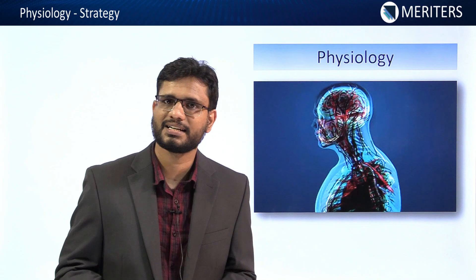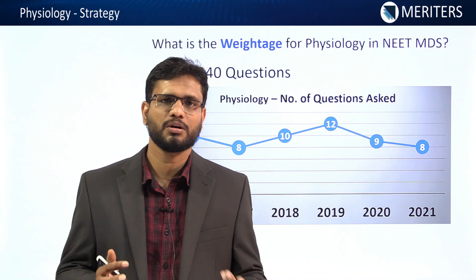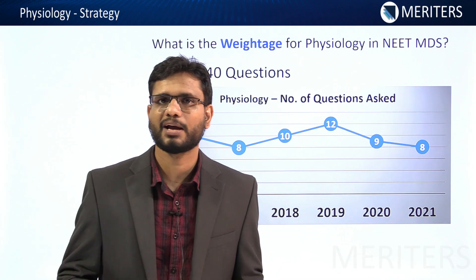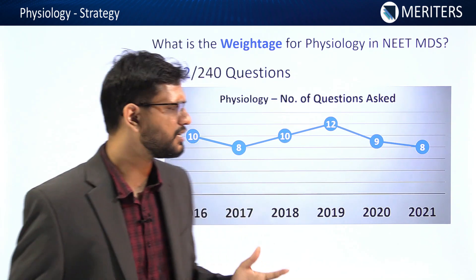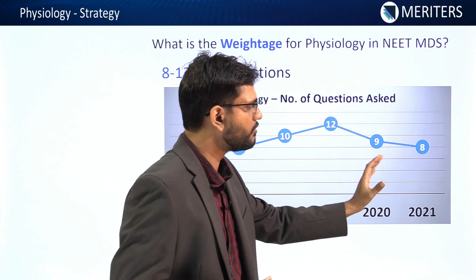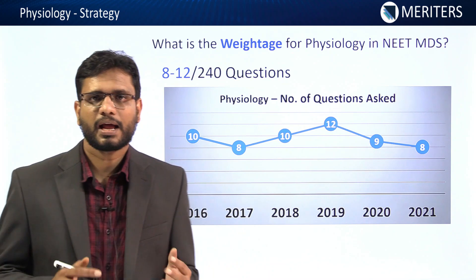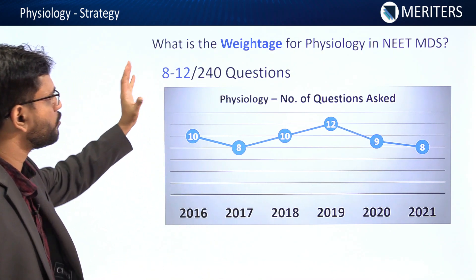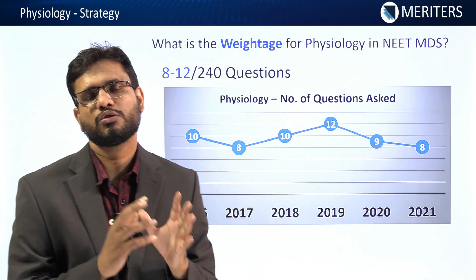If you approach this subject like this, it will be very interesting and feasible. Regarding the weightage, almost 14 questions are recommended from the combined subject of physiology and biochemistry. In past years, six to seven questions came directly from physiology: 10 in one year, 8, then 10 in 2018, 12 in 2019, 9 in 2020, and 8 in the current year. Direct questions are almost 8 to 12 out of 240, forming about 4% of the question paper.